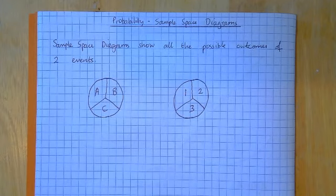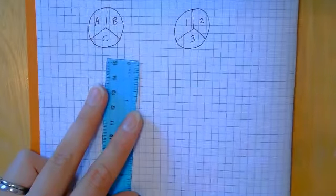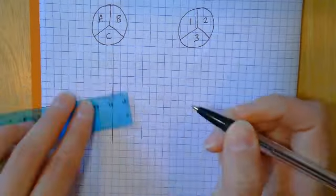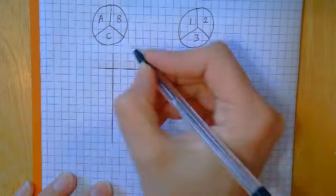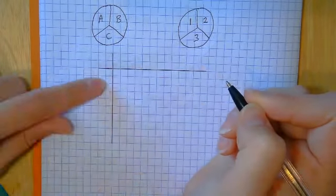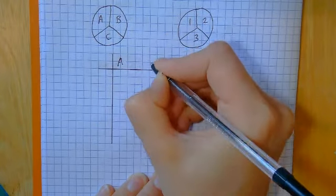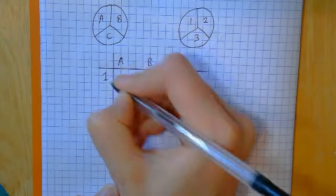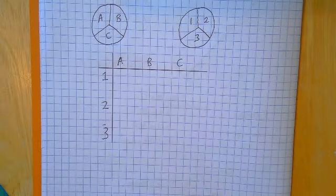We're going to draw a sample space diagram to show all the possible outcomes — they're really simple to draw. I'm going to draw a table, with one spinner going across and one going down. So I'm going to have A, B and C going across, and one, two and three going down. It doesn't matter which way you put those.